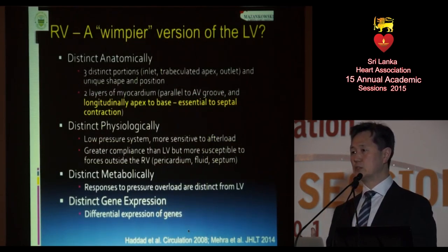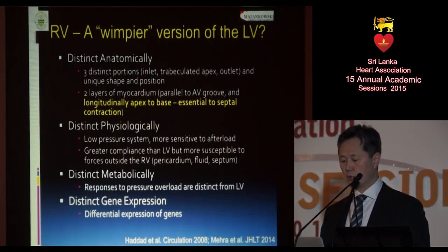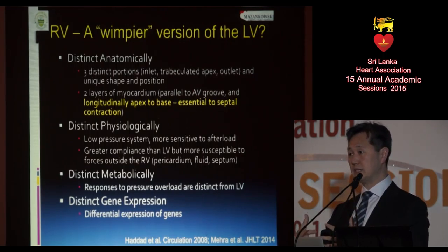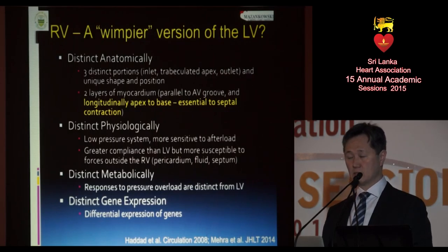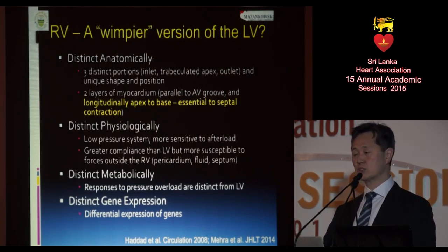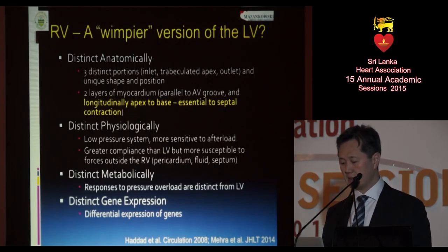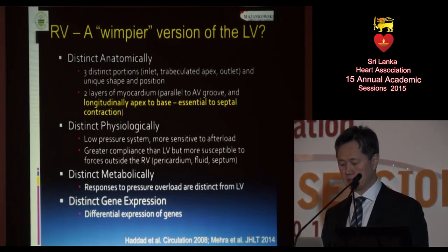Many people would say that the RV is no more than just a wimpier left ventricle. That's not quite true. There are quite a few differences, not only anatomically but otherwise as well. The more important anatomical differential is that the fibers of the muscles are longitudinal apex to base, and about 30% of RV contractility comes from septal contraction, which is mediated by the left ventricle. There are also physiologic differences: it is a low-pressure system, much more sensitive to afterload problems, and more compliant — but also more susceptible to forces from outside the heart, as seen in pericardial tamponade, where the RV and RA are more commonly affected than the LV. Metabolically, its response to pressure overload is very different from the left ventricle, with distinct gene expression as well.